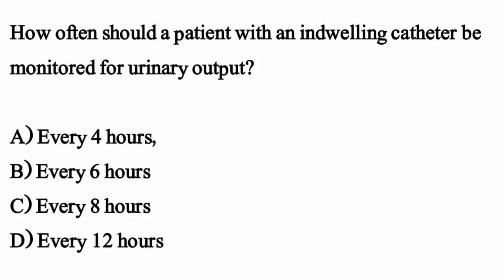How often should a patient with an indwelling catheter be monitored for urinary output? The correct option is option A: Every four hours.